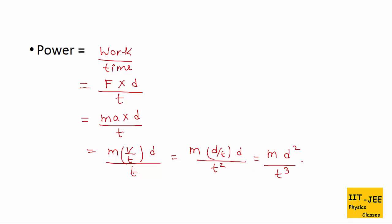Now put in the dimensions: M, L², and T³ in the denominator. When T goes to the top, it becomes M L² T⁻³. This is the dimension of power.